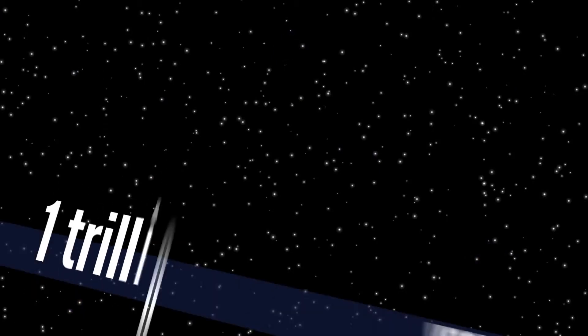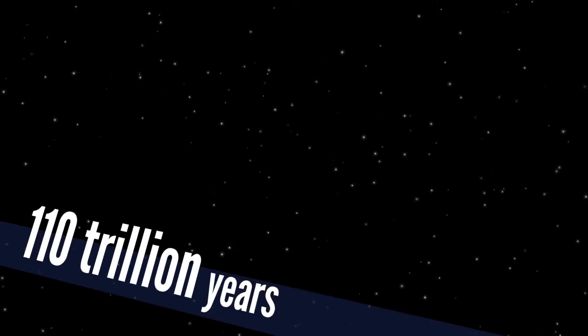After a trillion years, stars stop forming in the universe, but it takes 110 trillion years for them all to flicker out. This is where the sky goes dark.